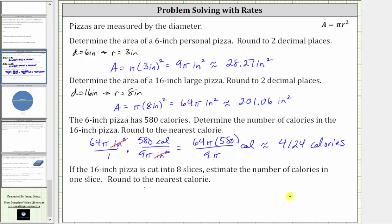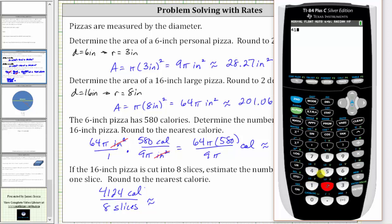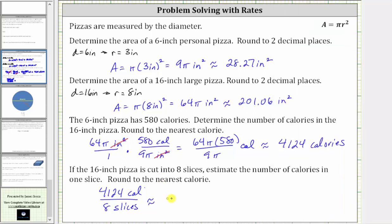For the last question, if the 16 inch pizza is cut into eight slices, estimate the number of calories in one slice, rounded to the nearest calorie. The large pizza has 4,124 calories total, so calories per slice equals 4,124 divided by eight. Going back to the calculator, 4,124 divided by eight — rounding to the nearest calorie gives approximately 516 calories per slice when the large pizza is cut into eight slices. I hope you found this helpful.